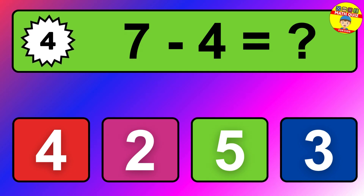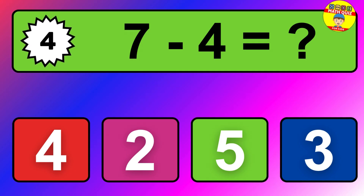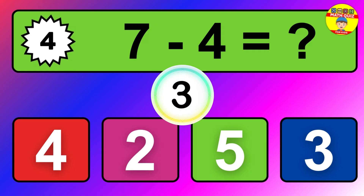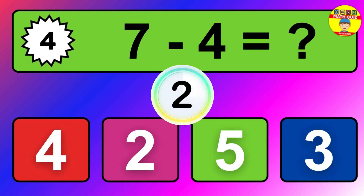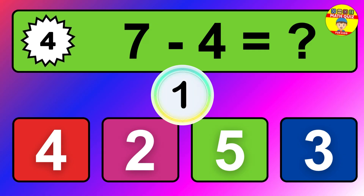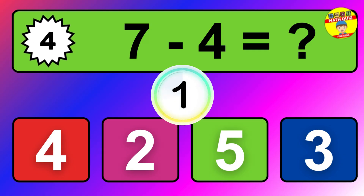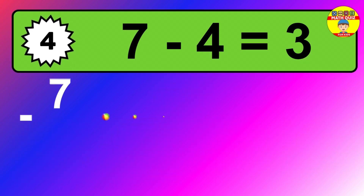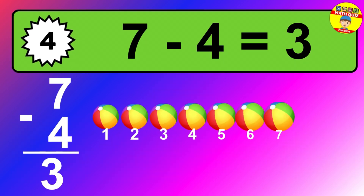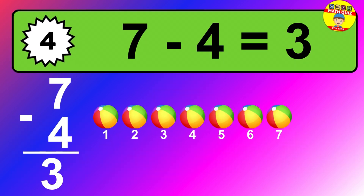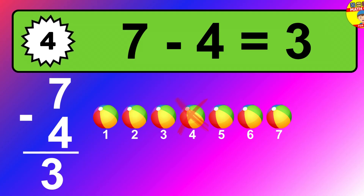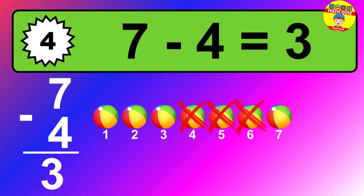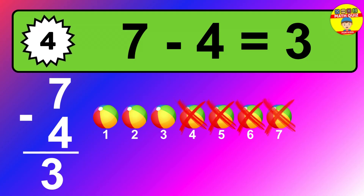Question 4. 7 minus 4 equals what? So the answer is 7 minus 4 is 3. Let's count it. 1, 2, 3.